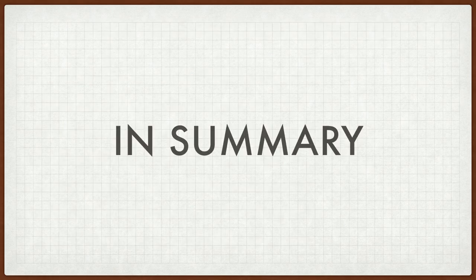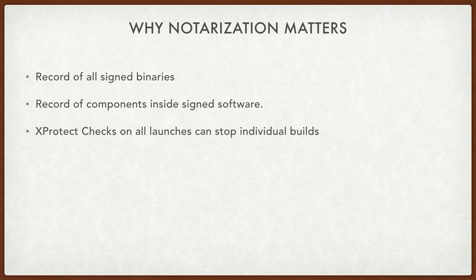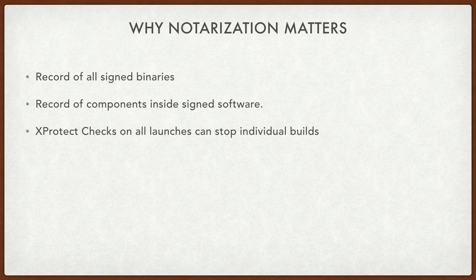That takes us to the summary. We've got plenty of time for questions. Why does this matter at all? Notarization matters because it gives Apple a copy of all signed binaries. What they maintain is a torn-apart version of all of those binaries — it wants to know what's inside there, what are the frameworks internally that it is using, as well as if you're including a third-party SDK that turns out to be substantially malicious. They have a record of everyone who's using it, which is super helpful, because they can go back to those developers and say 'did you know?' And there can be mitigation strategies in place. They can also use that to revoke the notarization ticket of a single build.